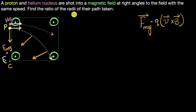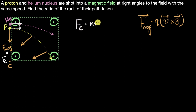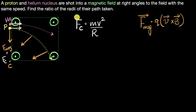I know the expression for the magnetic force, and I also know the expression for centripetal force from mechanics: centripetal force equals mv squared over r. Since I know that this centripetal force is provided by the magnetic force, I can figure out the magnitude, plug it in, and then solve for the radius. That's how I'll get the radius and then take the ratio.